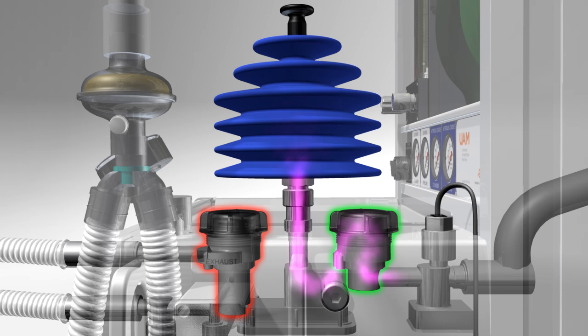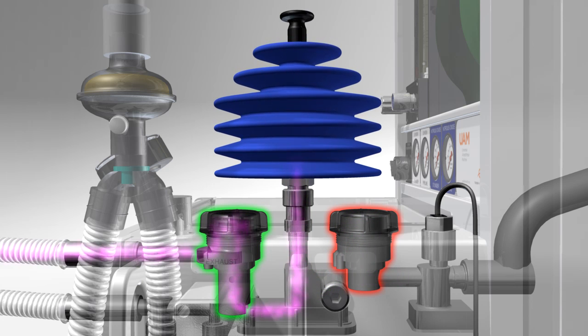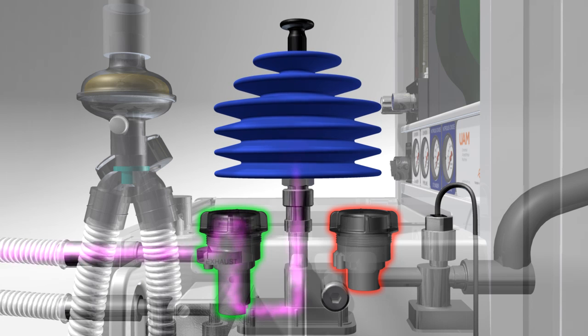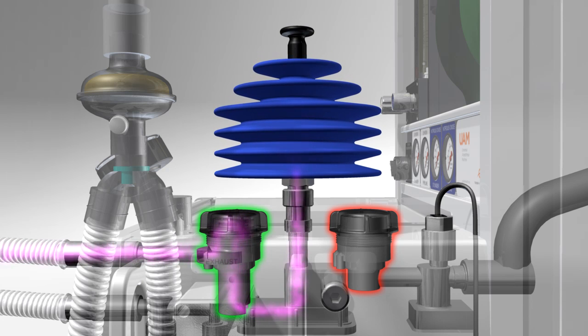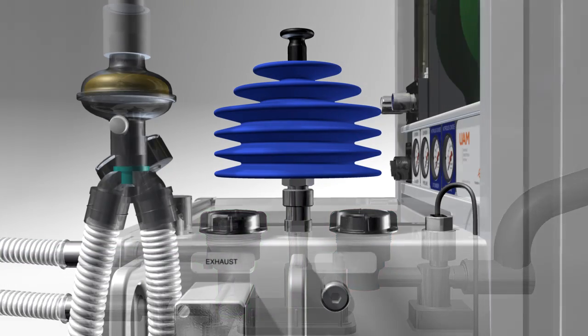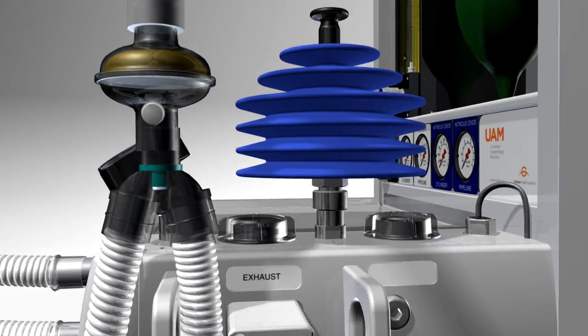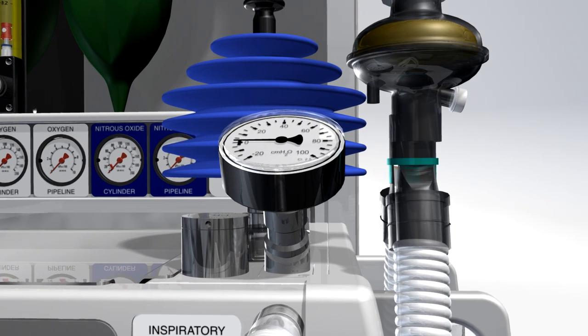As the bellows are pushed down, the gas flows out through the second non-return valve into the inspiratory limb. The first non-return valve is closed. Another pressure relief valve ensures that excessive manual force on the bellows cannot cause harm to the patient.